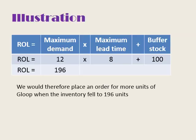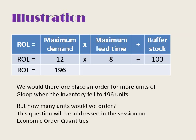As a consequence, every time our inventory of Gloop fell to 196 units, we would place an order for more units. We've then got to consider how many units we would order, but this is a question for a different session — we'll be looking at that when we cover economic order quantities.